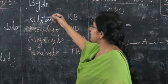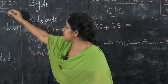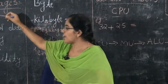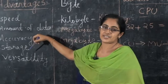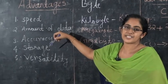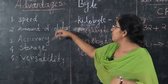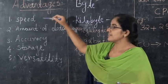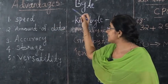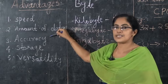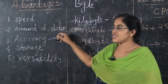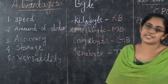To repeat: the five advantages of a computer are speed, amount of data, accuracy, storage, and versatility.